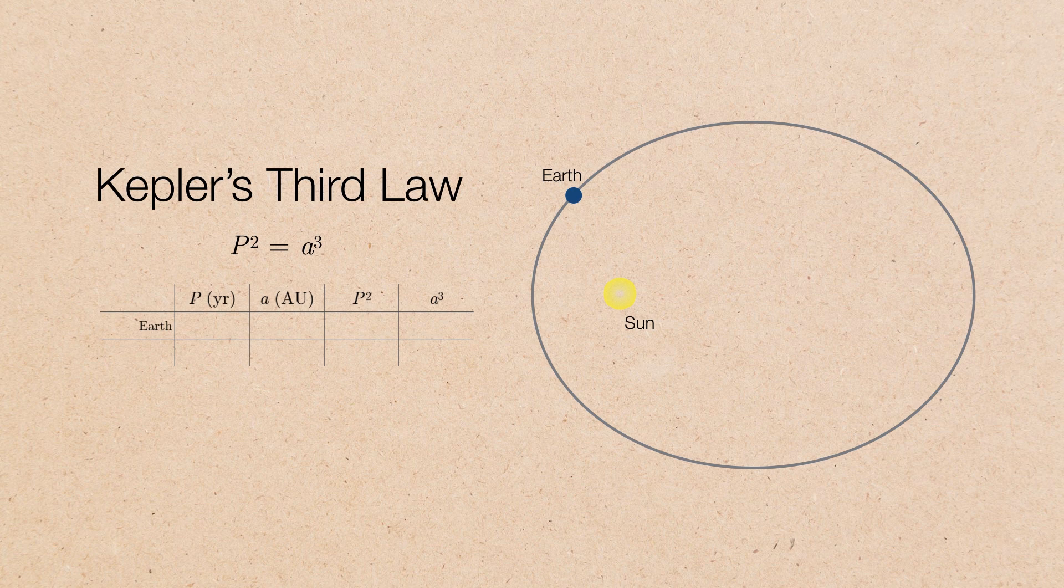To show you an example of this, let's take a look at the very simplest. We're just going to use our own planet Earth. So we know its orbital period is exactly one year. Its semi-major axis is exactly one astronomical unit. So one squared is equal to one, and its semi-major axis cubed is also equal to one. So p squared equals a cubed. That is to say, they both equal one.